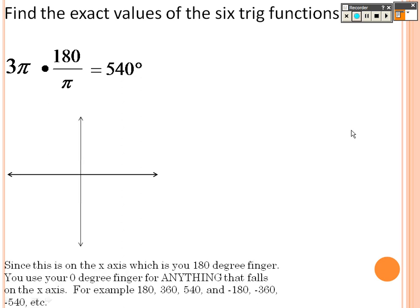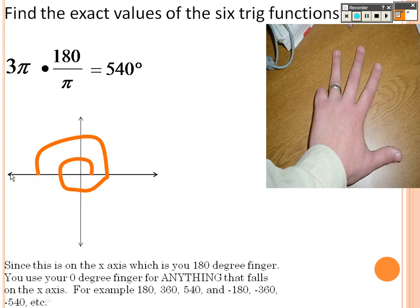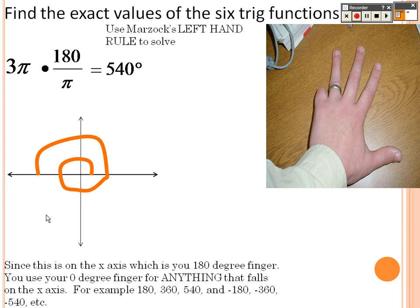For 3π — some people have trouble with pi form, so switching it: 3π equals 540 degrees, meaning you go around to 360 plus another 180, landing right there. The terminal point on the unit circle is (negative 1, 0). So x is negative 1, and since x is cosine, cosine is negative 1. Sine is y, so sine is 0. Tangent is y over x — 0 over negative 1 — so tangent is 0. You can flip to find reciprocals or use the hand.